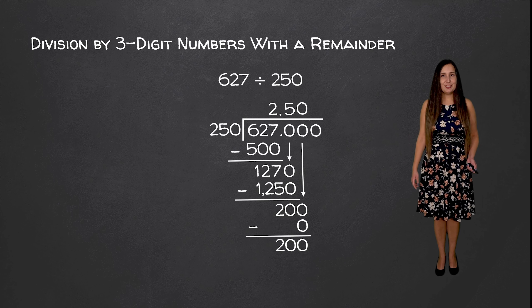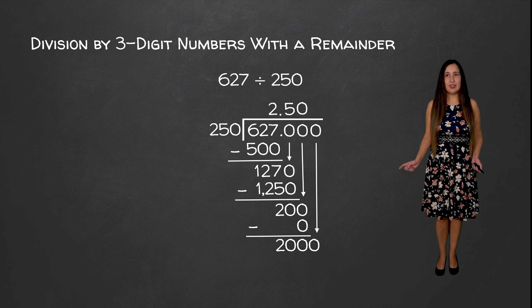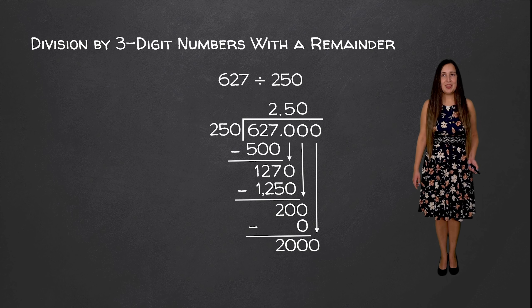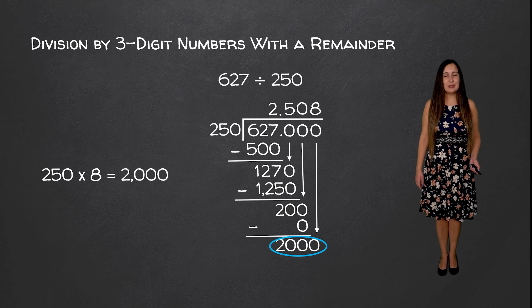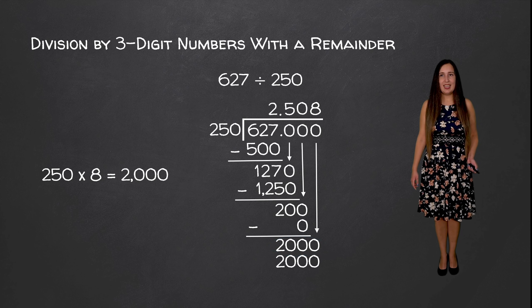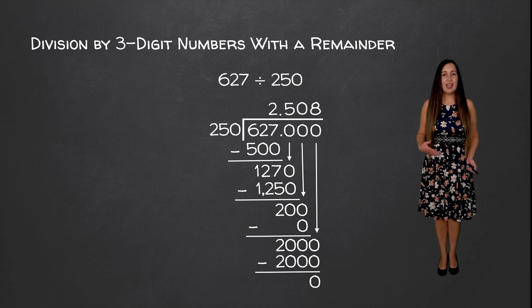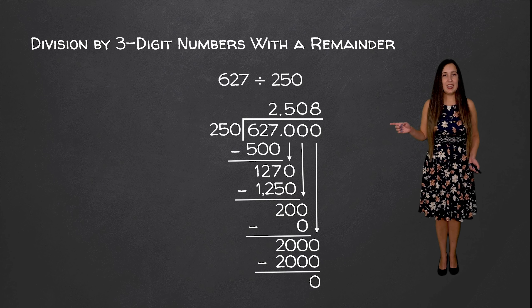We are going to add another zero and bring it down. Now we're going to see how many times 250 goes into 2000. The answer is 8 because 250 times 8 is equal to 2000. We're going to write 2000 underneath and subtract — we have no remainder. So our exact answer is 2 and 508 thousandths.